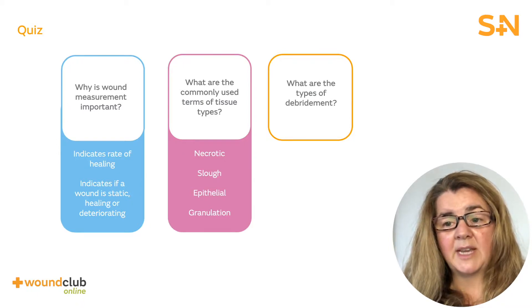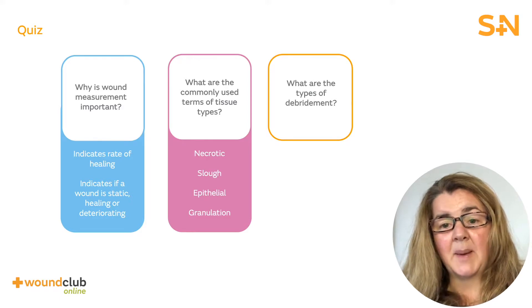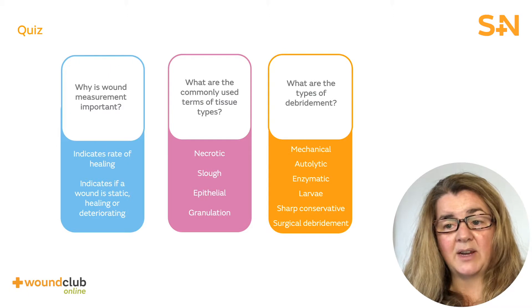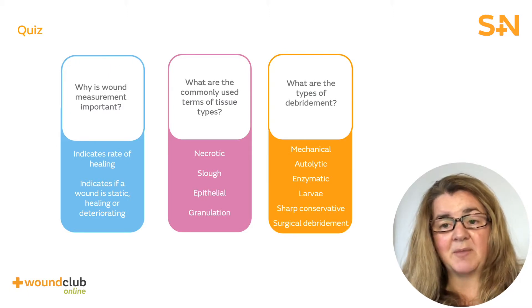What are the types of debridement? Mechanical, autolytic, enzymatic, larvae, sharp, conservative, and surgical debridement.